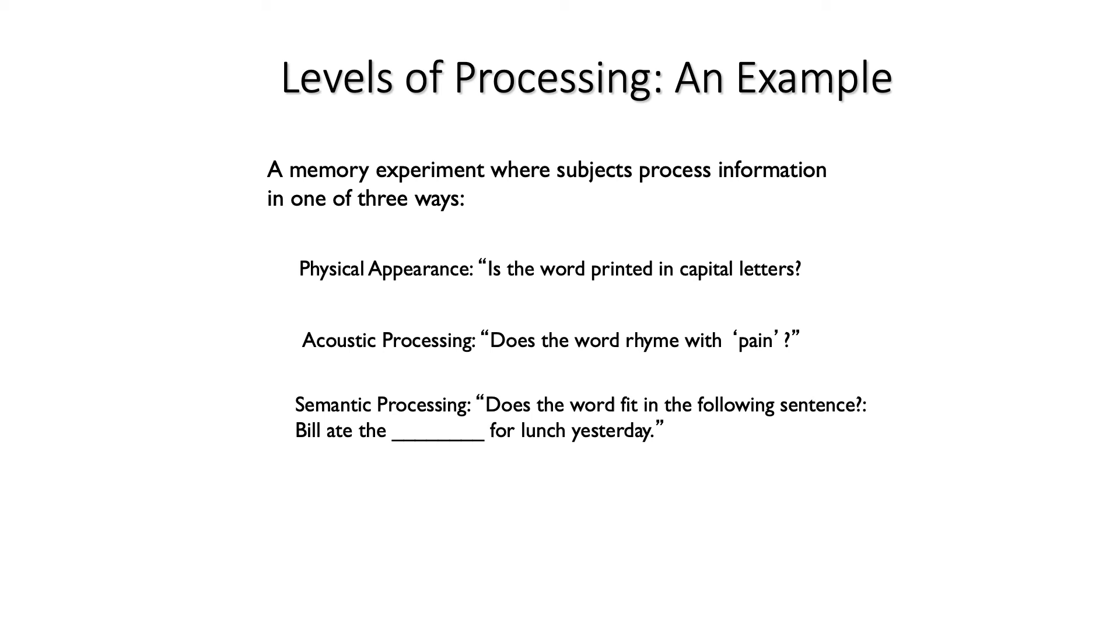What they typically find in a study like this is that the people in the deep processing group, the people in the semantic processing group, actually do just as well on the memory test as the control group that intentionally tried to memorize the words. And the people who did the most superficial processing, the ones that simply made the judgment is the word in capital letters or not, typically do the worst of all of the groups. So this is clear evidence that the depth of processing might be a good way to understand how memory works.